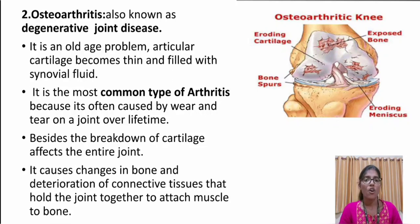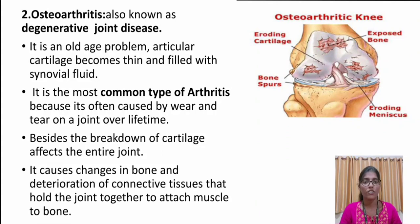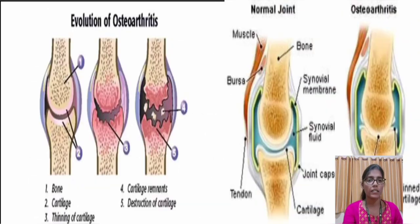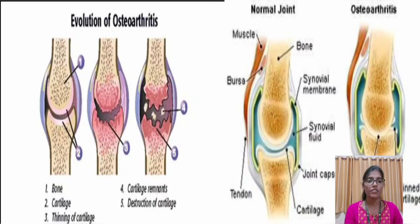Osteoarthritis, also known as degenerative joint disease, affects a very large number of tissues. It is an old age problem wherein articular cartilage becomes thin and is filled with synovial fluid. It is the most common type of arthritis, often caused by wear and tear on a joint over its lifetime. Besides breakdown of cartilage, it affects the entire joint and causes changes in bone and deterioration of connective tissue. You can see the image of an osteoarthritic knee where eroding cartilage and exposed bones are visible, along with the difference between a normal joint and an osteoarthritic joint.